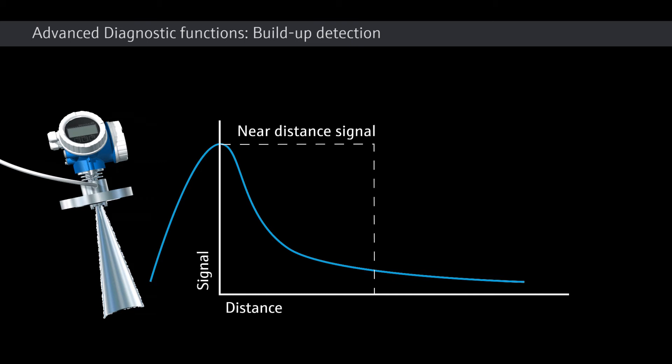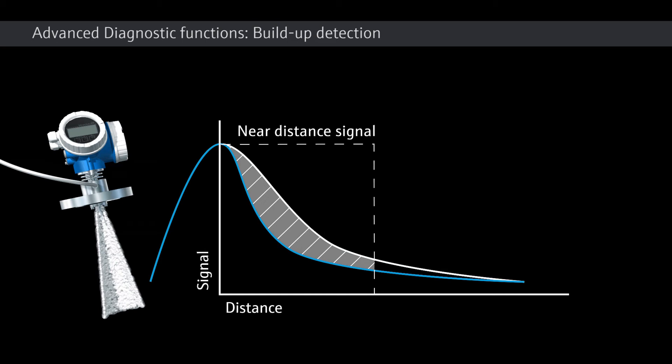The advanced diagnostic functions of the new Micropilot offer the possibility of analyzing the antenna near distance of the measuring signal. The buildup within the antenna significantly changes the near distance signal.